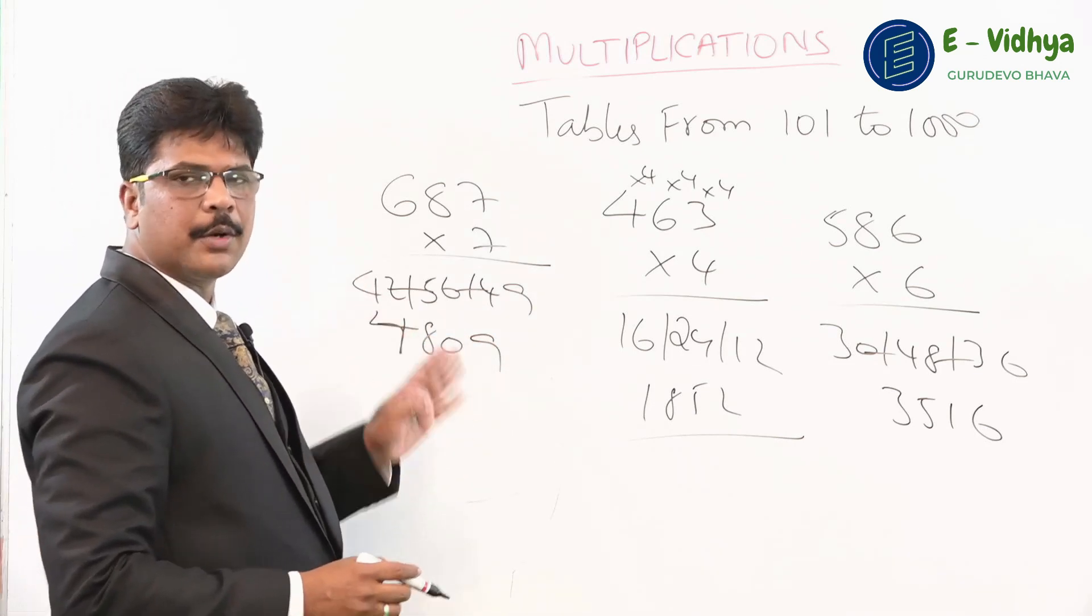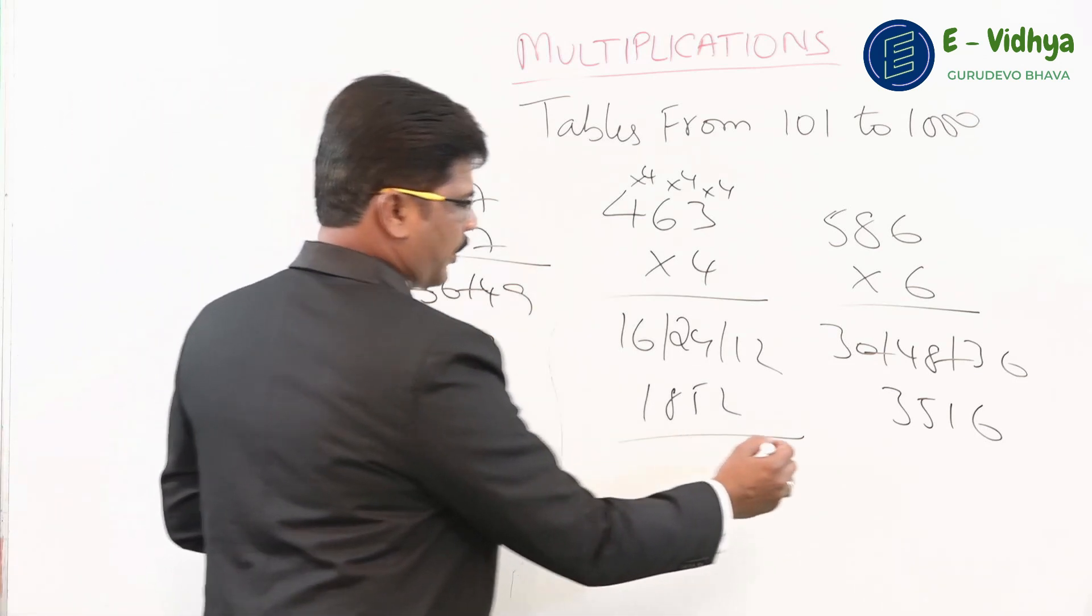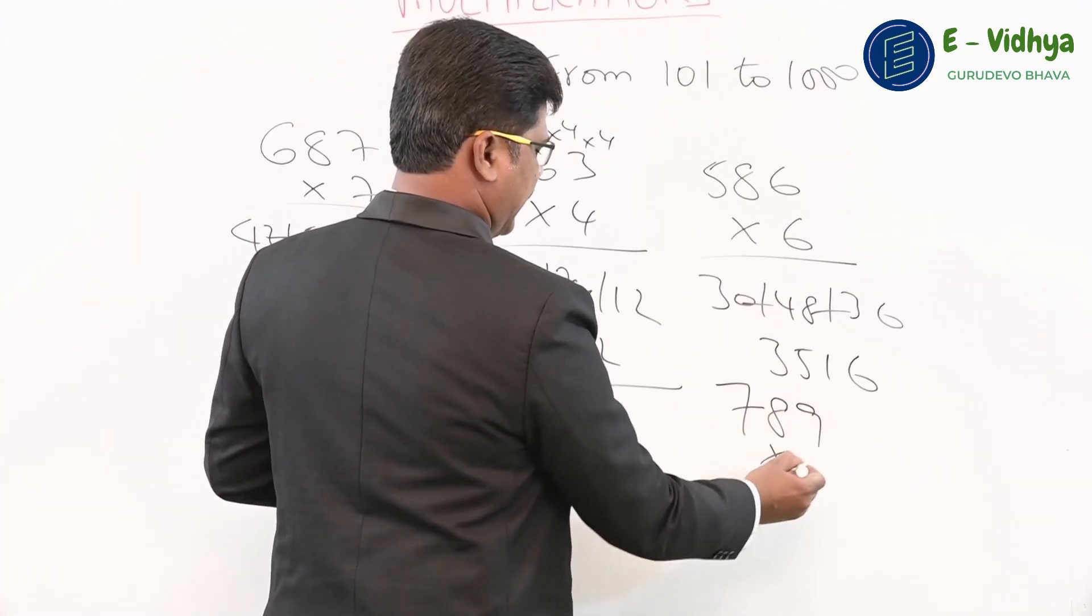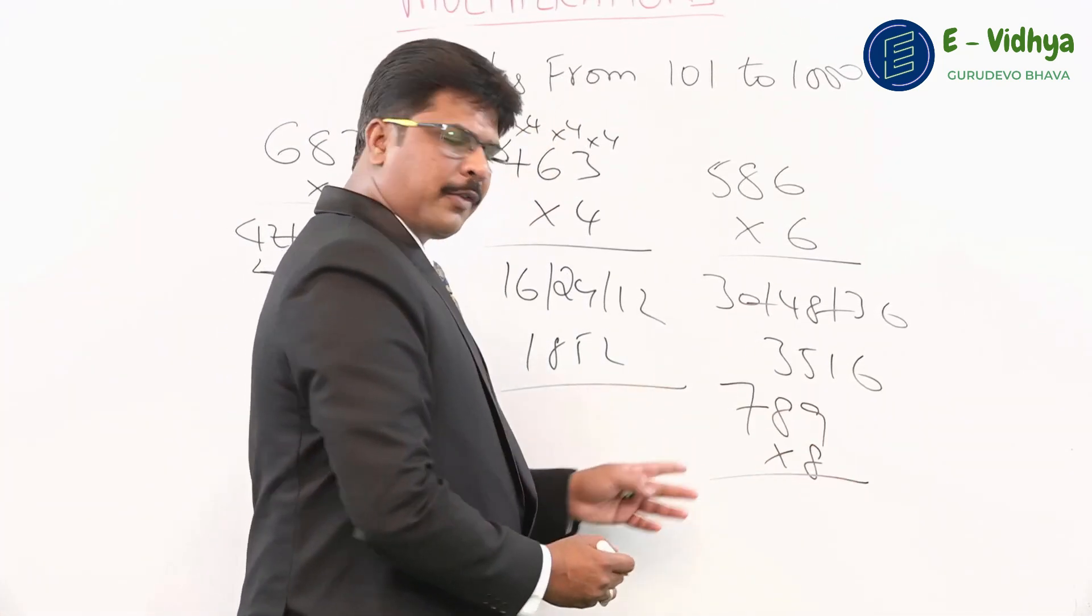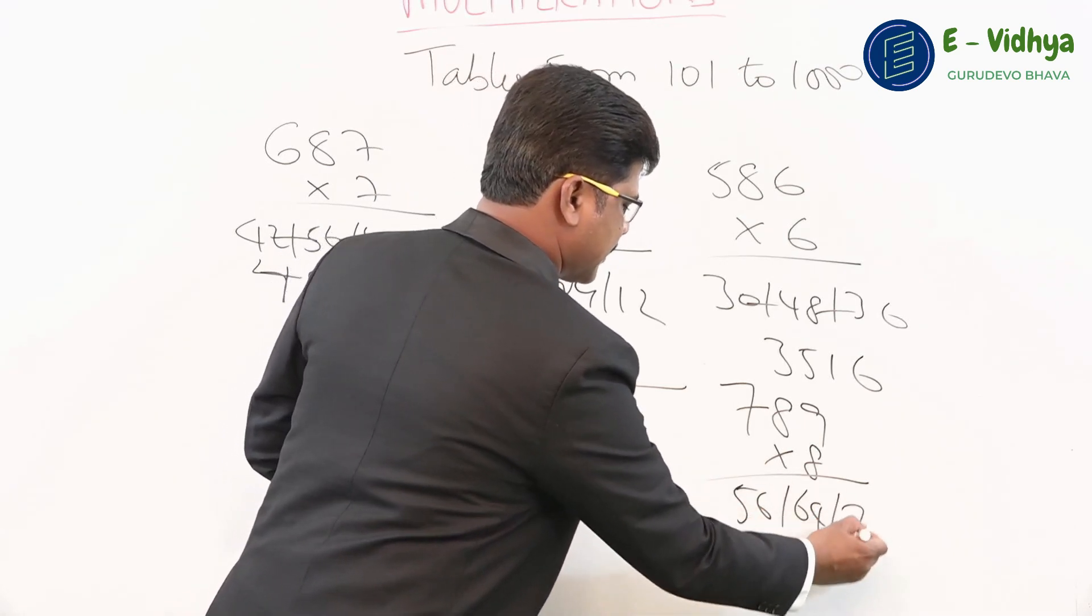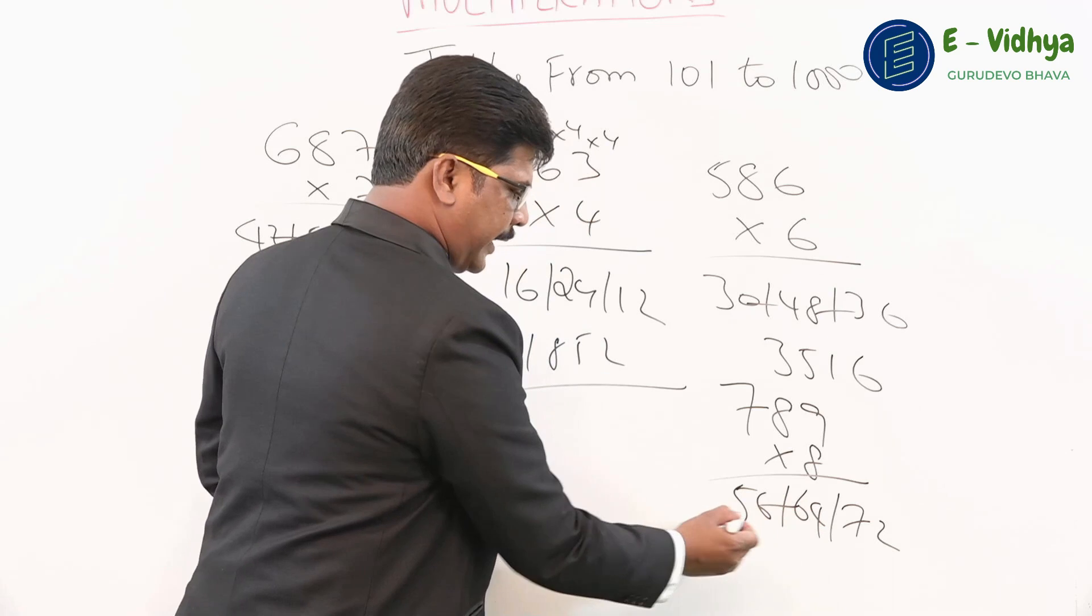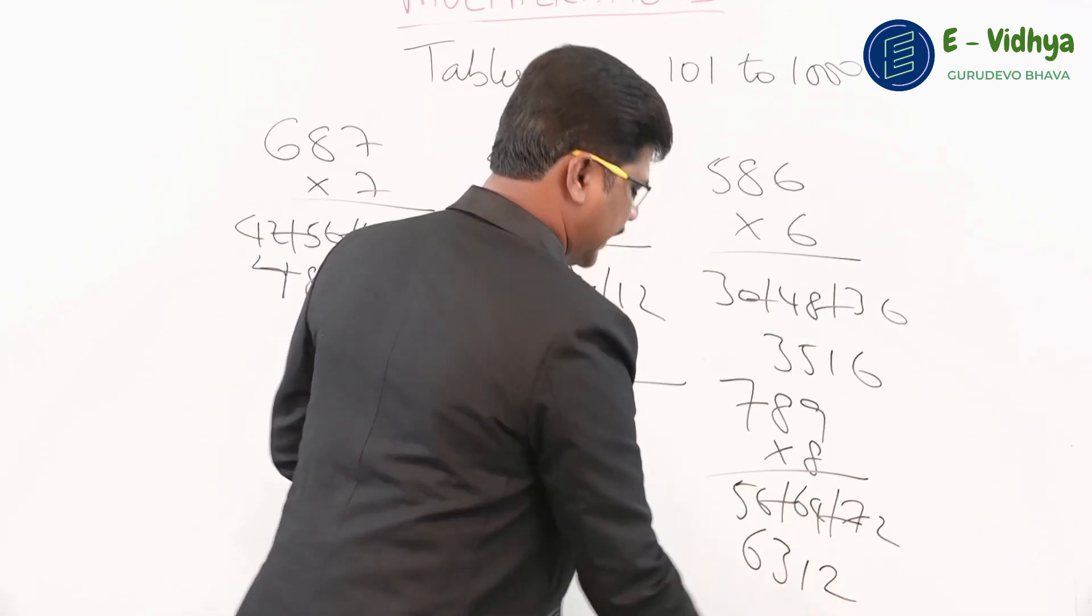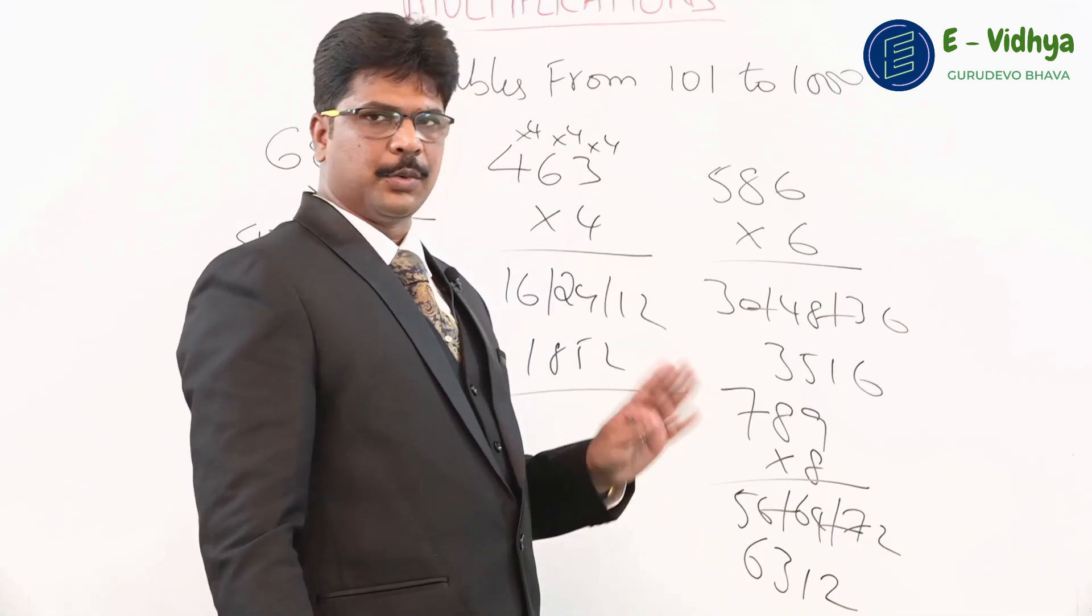789 times 8: eight sevens are 56, eight eights are 64, eight nines are 72. So I get 62, next press carry, one number more gives 63, and the end number is 12. The answer is 6312.